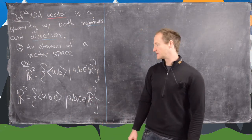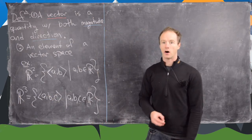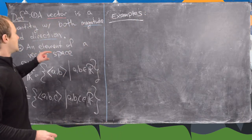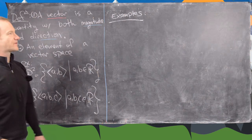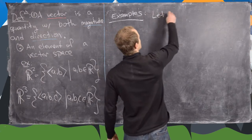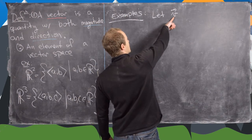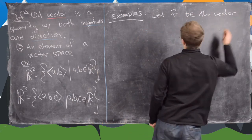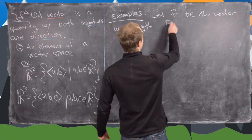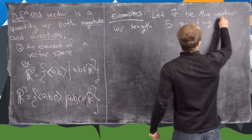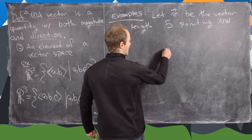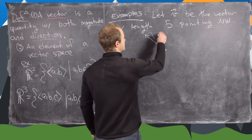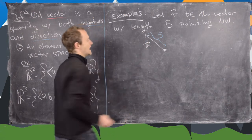R3 can be thought of in the same way: angle brackets ⟨A, B, C⟩ where A, B, and C are in R. For our first example, we define a vector using words in line with the first definition. Let V be the vector with length 5 pointing northwest. We can draw that with an initial point, going in the northwest direction, with the scale built so that this is 5 units — a good graphical representation of vector V.